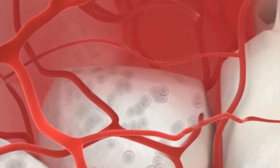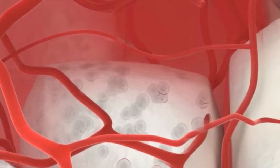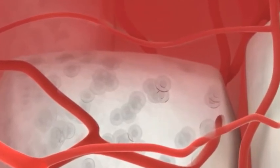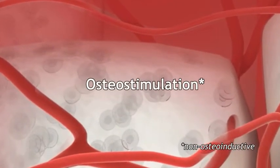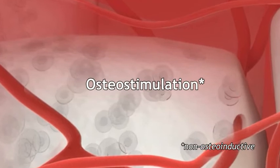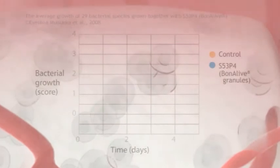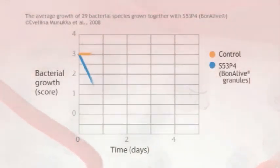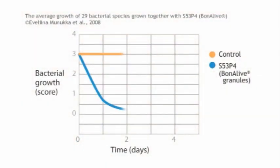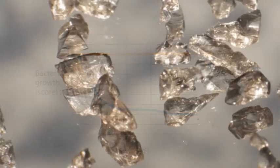Bonalive is a bone graft substitute with special features making it suitable for some demanding applications. Osteostimulation is a property characterized by the capacity of the bone graft to stimulate growth and maturation of osteoblasts. In addition, the unique feature of Bonalive to inhibit bacterial growth clearly makes it the preferred bone graft choice in the never-ending battle to decrease infections.